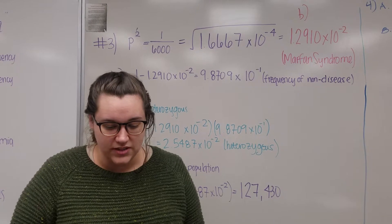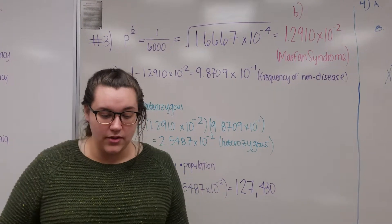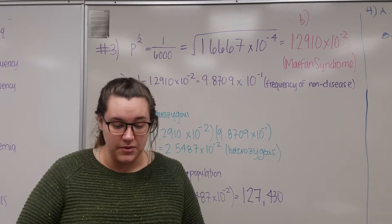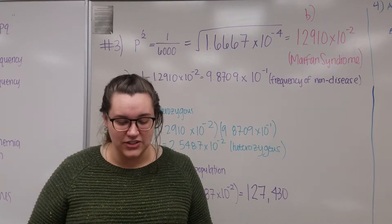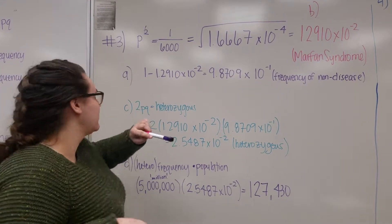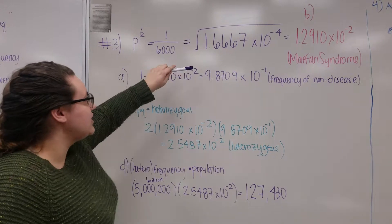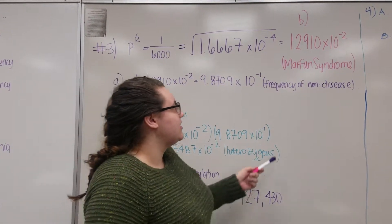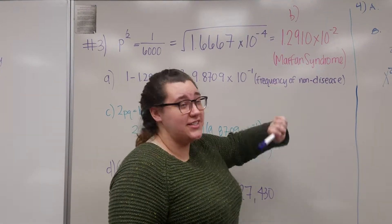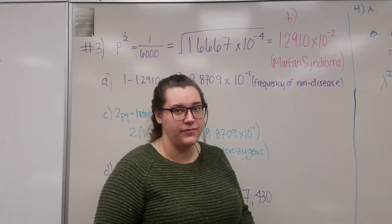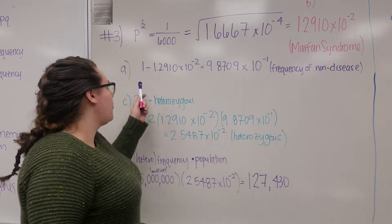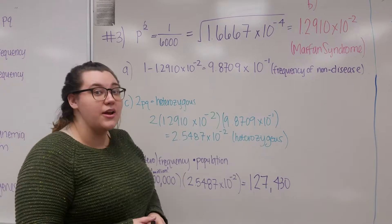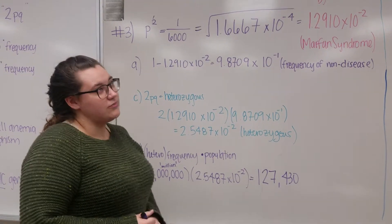Okay, so this says, Marfan syndrome is an autosomal dominant disorder. For the purposes of this problem, we will assume that Marfan syndrome affects 1 in 6,000 individuals in the human population. What is the frequency of the non-disease allele in the human population? So for A, you actually had to find B, which is the Marfan syndrome, first. So I ended up doing that. So B is actually first. So again, we have our P squared. And we know it's 1 over 6,000. In order to get rid of the square, we take the square root of this number, which is 1.6667 times 10 to the negative 4th. And then that gives us 0.012910 for Marfan syndrome. So those are the percent of the population that's going to have Marfan syndrome. Then you take 1 minus that frequency. So 1 minus 1.2910 times 10 to the negative 2nd. And that's going to give you the frequency of the non-disease, which was 9.709 times 10 to the negative 1st. So 0.9871.